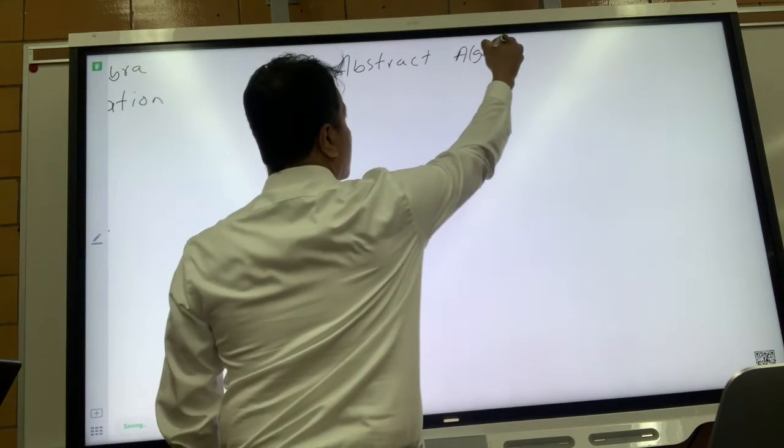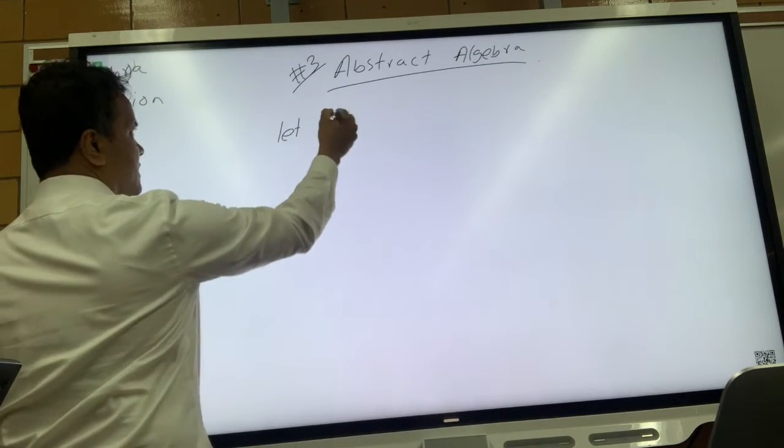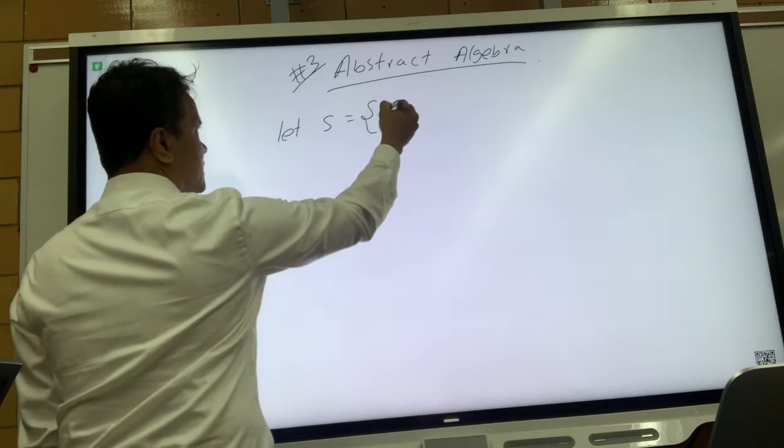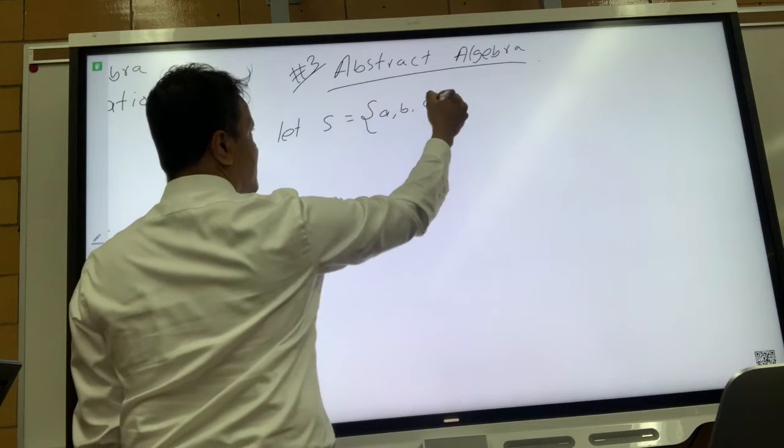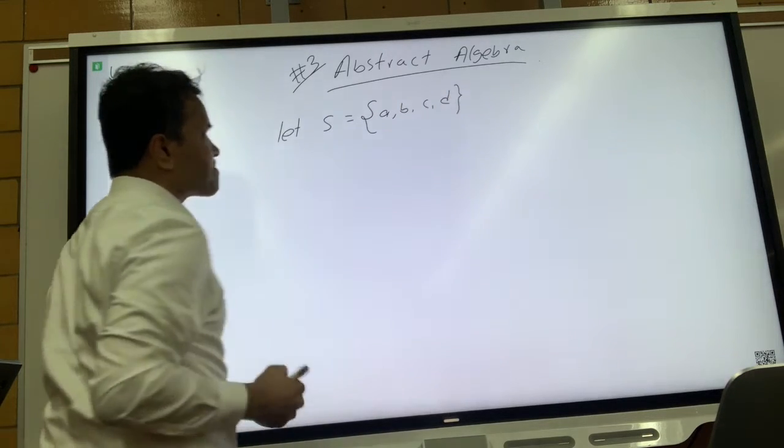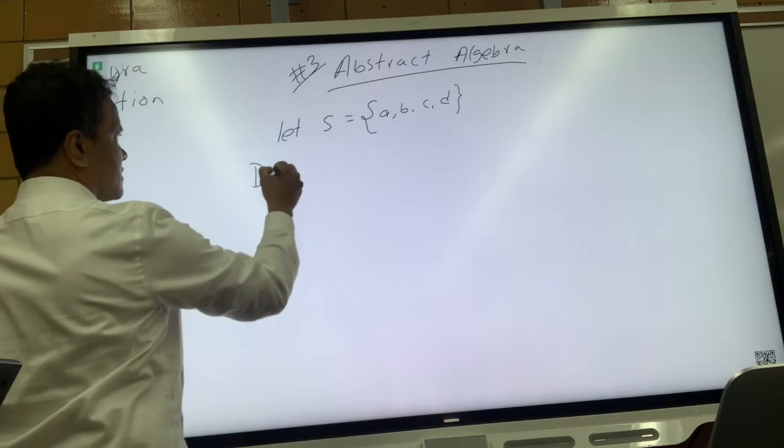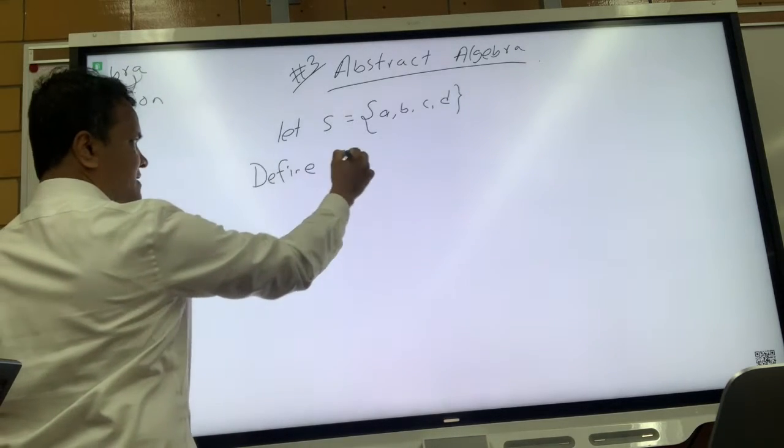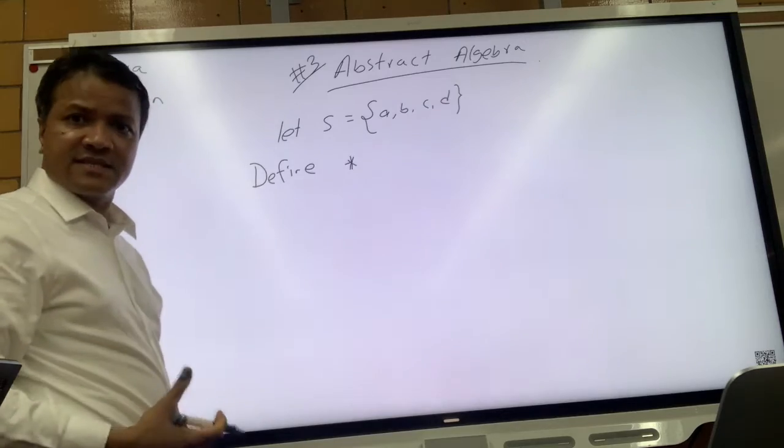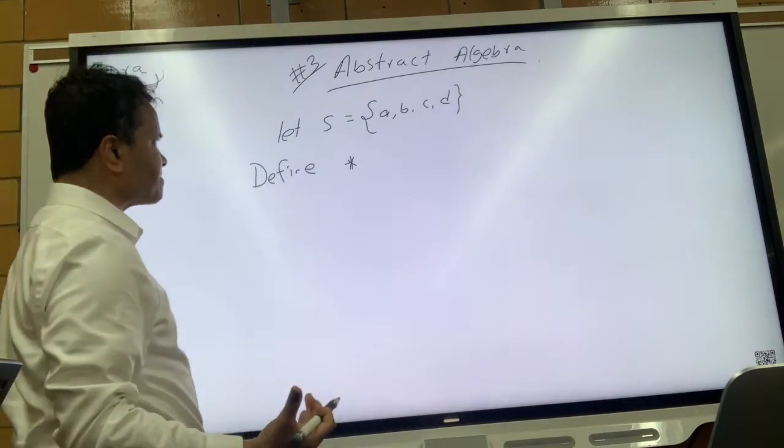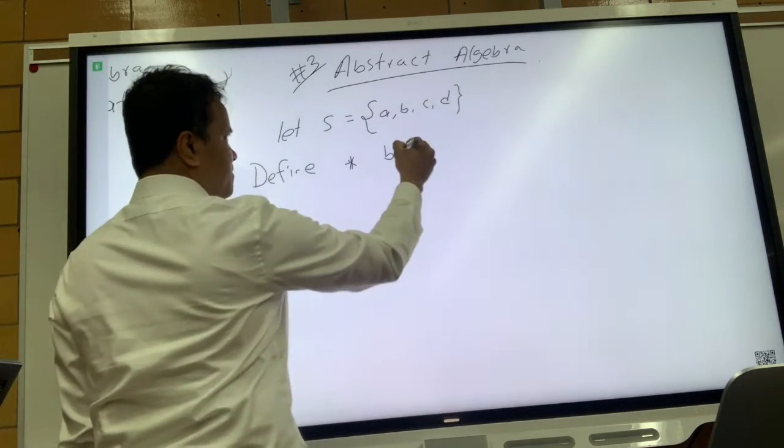All right, so let's get started. Let the set S = {a, b, c, d} consist of four elements: a, b, c, and d. Let's define a star operation, which is a binary operation defined by the following table. I have not created the table yet, so let's create the table.